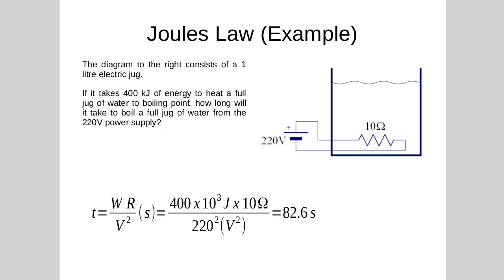So if we put that equation there and we substitute in 400 kilojoules, 400 by 10 to the 3 joules by 10 ohms over 220 volts squared, we get 82.6 seconds.